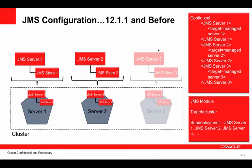So exactly what changes are we talking about? We're talking about being able to target a JMS server and a WebLogic store at a cluster. And the WebLogic configuration system then figures out what instances of JMS servers and stores to create on which servers in the cluster. JMS is very stateful, so in previous releases, we enforced that statefulness through explicit per-server configuration.